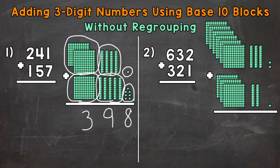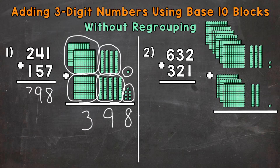To recap: we did 1 one plus 7 ones, which gives us a total of 8 ones. Then we did 4 tens plus 5 tens, giving us a total of 9 tens. And then 2 hundreds plus 1 hundred gives us a total of 3 groups of 100, which has a value of 300. So the final answer is 398.